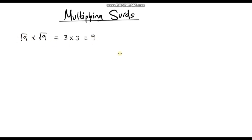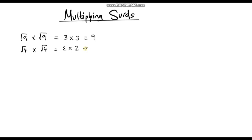Let me just do that with another example so you can see. So let's say we had the square root of 4 multiplied by the square root of 4. Well the square root of 4 is 2, so that's going to be 2 times 2, which is obviously 4.